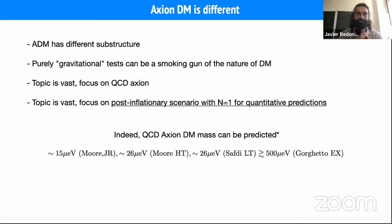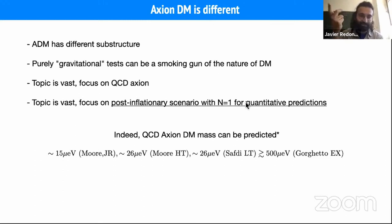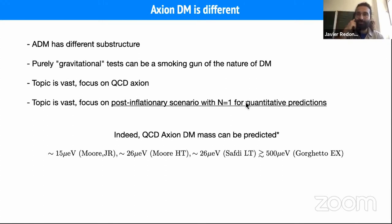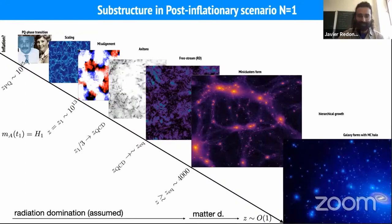Here I'm going to focus on the QCD Axion, and in particular on the post-inflationary scenario with n equals 1, because it's much easier to do quantitative predictions in this scenario. The most important thing is that in principle the Axion Dark Matter mass can be predicted - the mass that QCD Axions have to have in order to account for the full amount of dark matter observed. The most recent estimates were more or less in the tens of microelectron volts until recently.